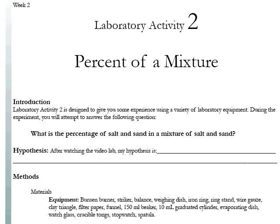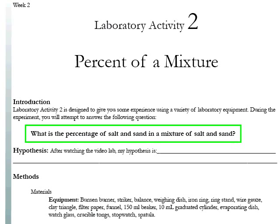Laboratory activity 2 is about percent of a mixture. One of the main things this activity is about is to help you get some experience using a variety of laboratory equipment. This experiment follows the scientific method and you'll have a question that you're trying to answer: What is the percentage of salt and sand in a mixture of salt and sand?